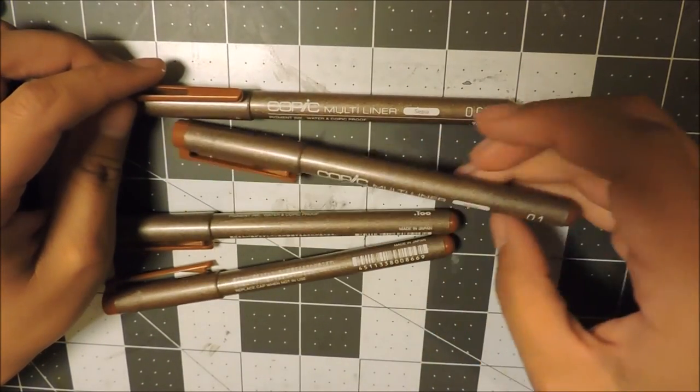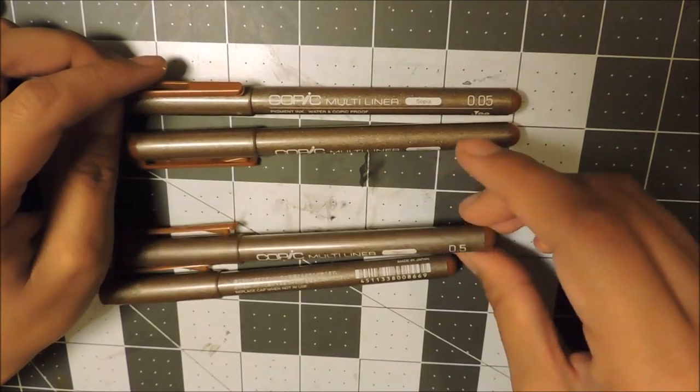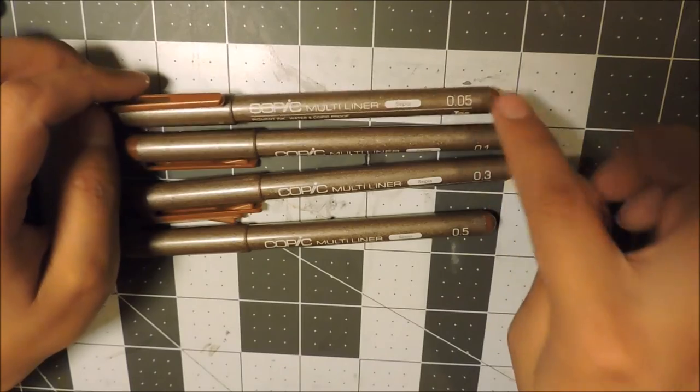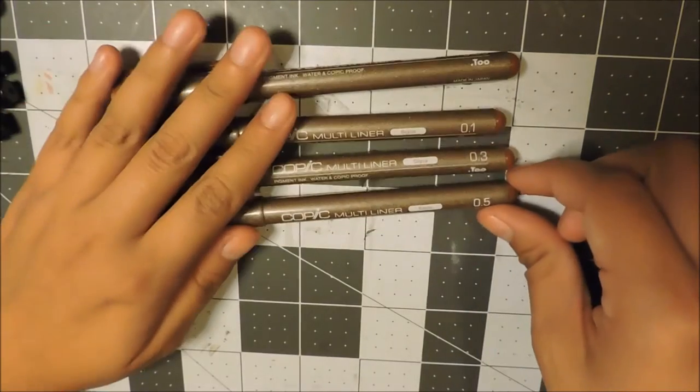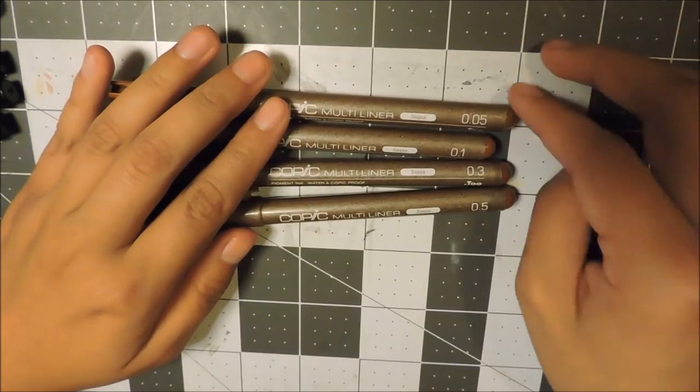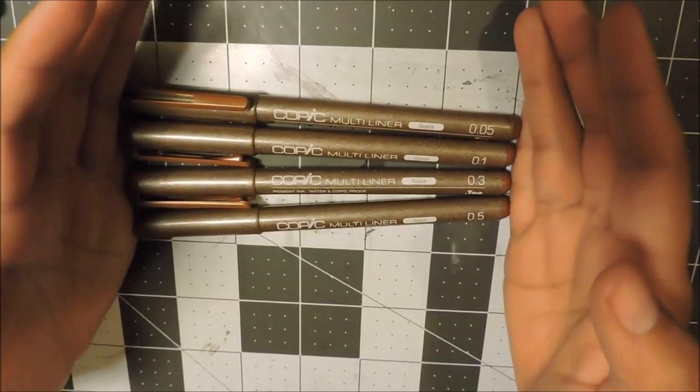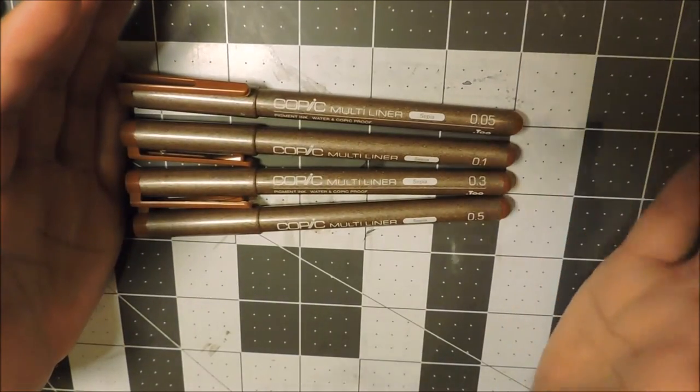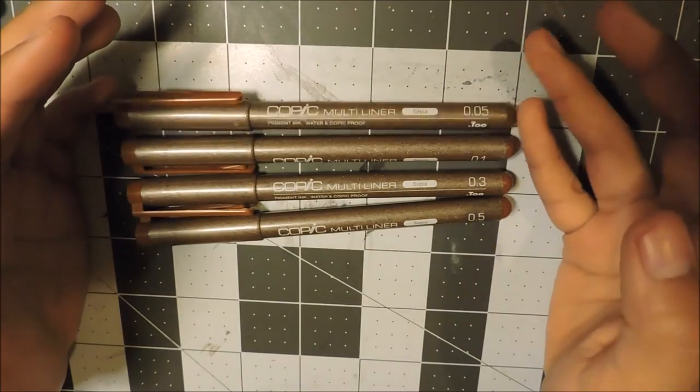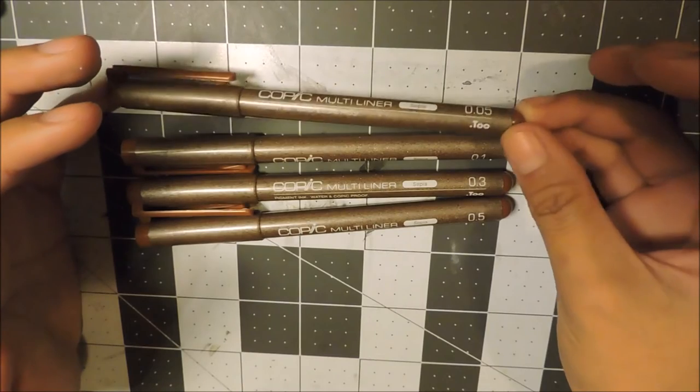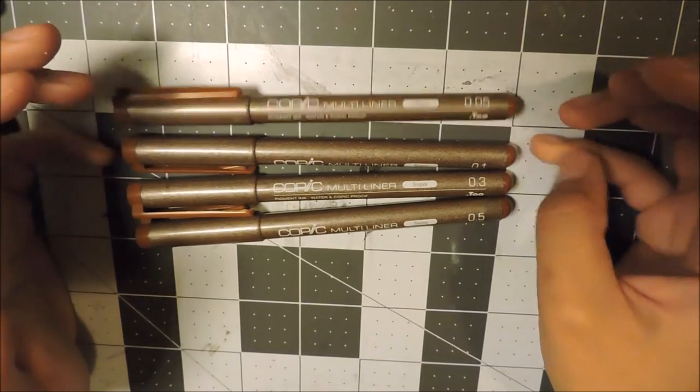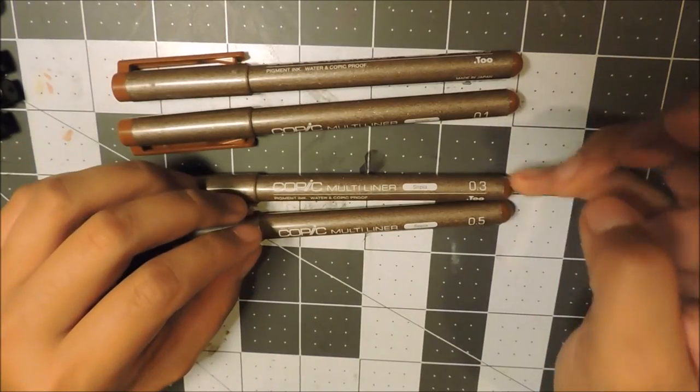The smallest being the 0.05, then the 0.1, 0.3, and 0.5. For this one same principle, these I only tend to use more for watercolor. If I'm going to do manga and I want more flesh tone or watercolor skin tones I will use the 0.05 and the 0.1.